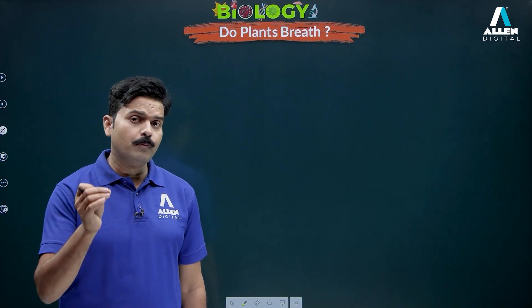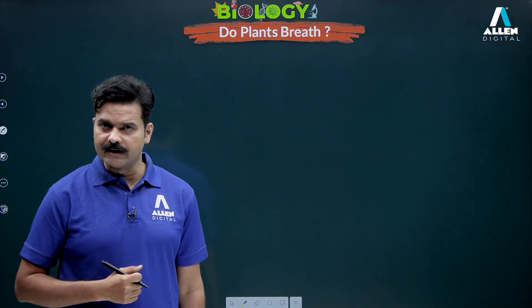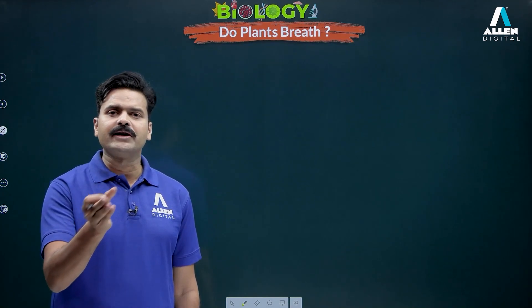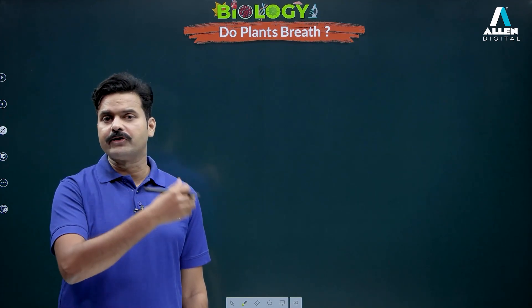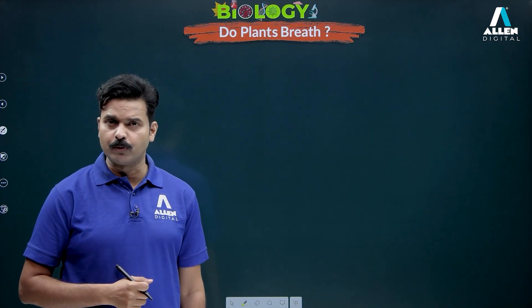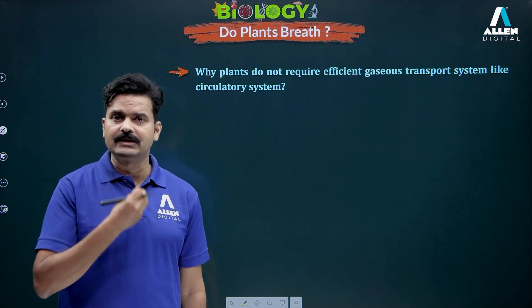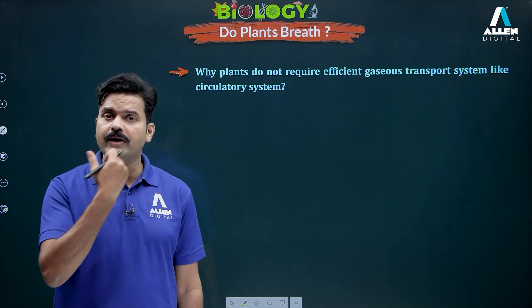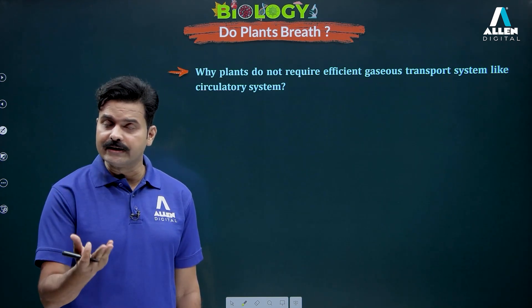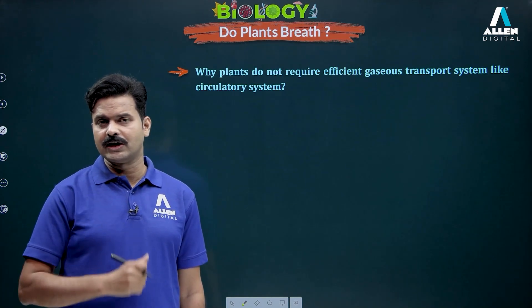The NCERT asks: do plants breathe? Looking at them, it doesn't seem like plants breathe. But the answer is — yes, plants do breathe. Further, the NCERT states that plants do not require an efficient gaseous transport system such as a circulatory system. Plants are breathing, so they should have an efficient circulatory system for gaseous transport — just like in our body, oxygen goes to the lungs and the circulatory system circulates it throughout the body. But in plants, this is not the case — no circulatory system is found.